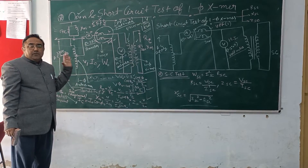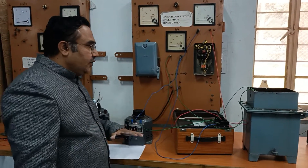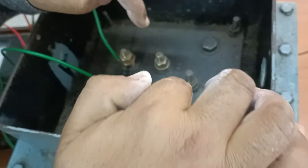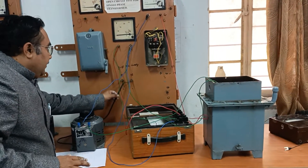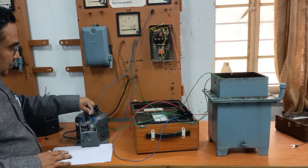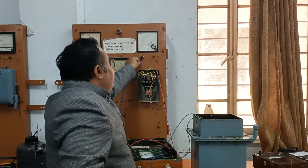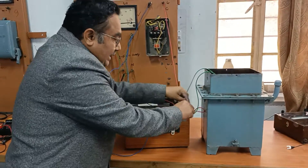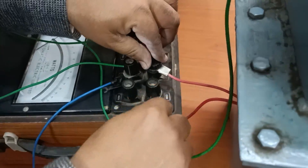Now we will move to the panel of this open circuit test. We are on the panel where we will be conducting the open circuit test for the single-phase transformer. This is our single-phase transformer. You can see these are the two primary terminals - the phase and neutral. The secondary is kept open, so we are not connecting anything to it. We are feeding this transformer with the help of this autotransformer. This autotransformer is being supplied from phase and neutral, and these are its two output terminals.